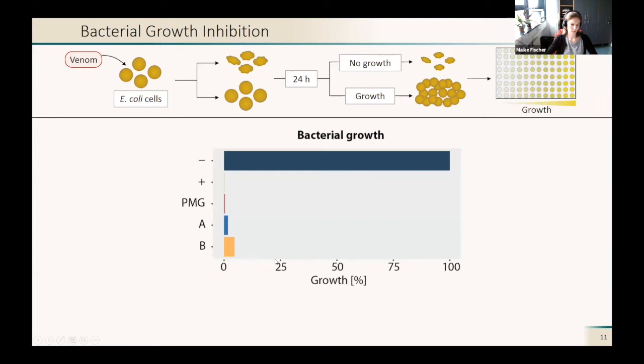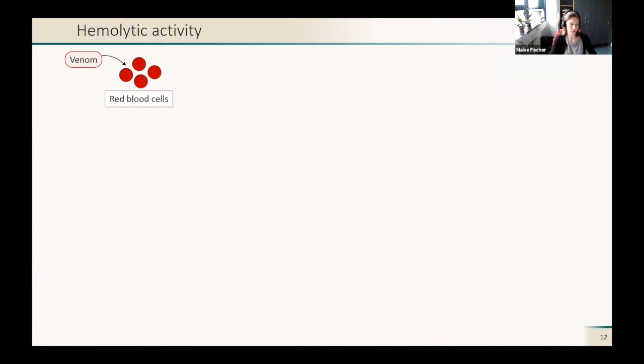Here you see the bacterial growth in percent. The negative control, they grew pretty well. But all the other treatments, positive control, the unfractionated PMG venom, and both of our fractions almost completely inhibited growth of E. coli cells. So we can say that both fractions inhibited the bacterial growth.